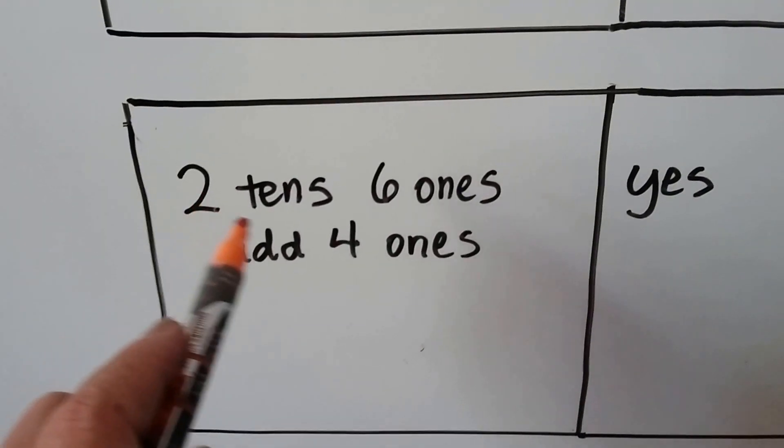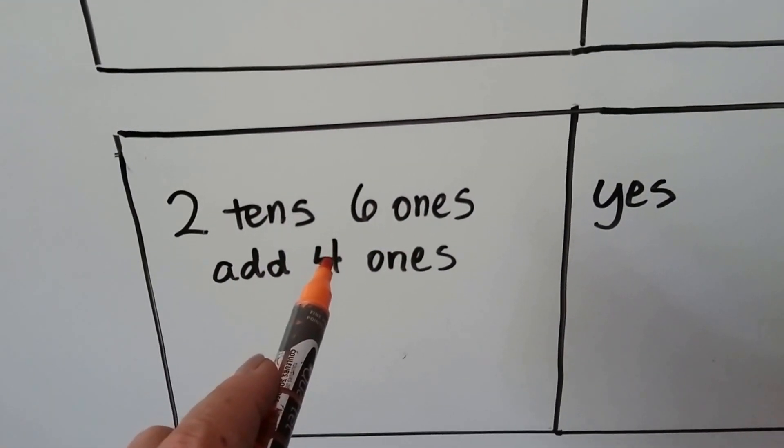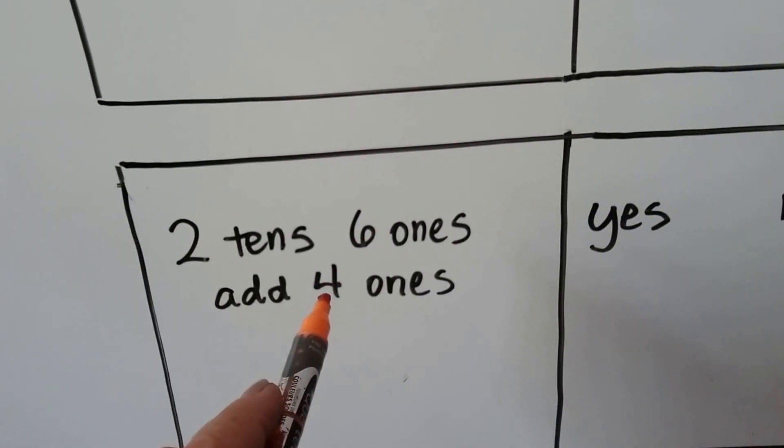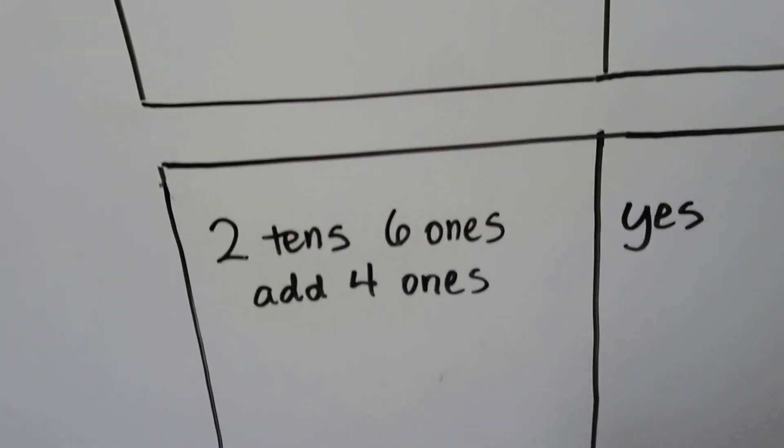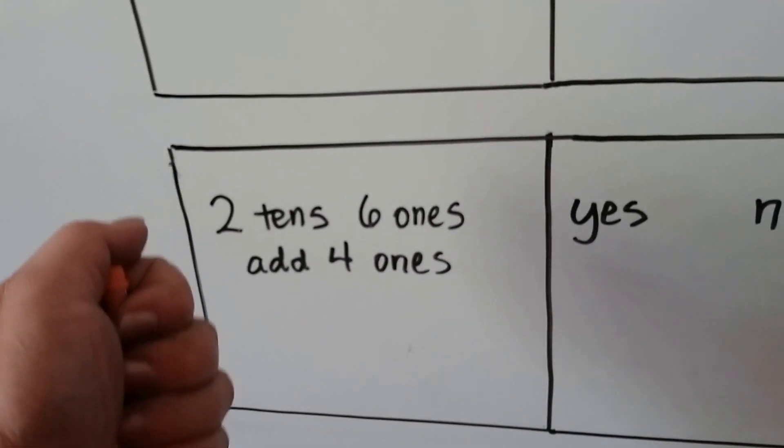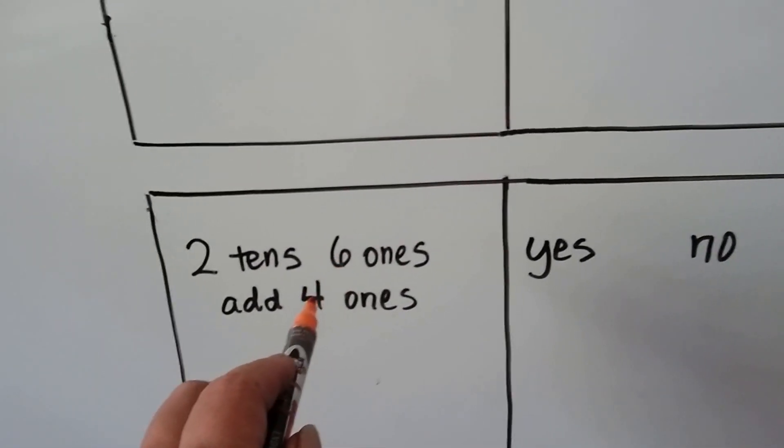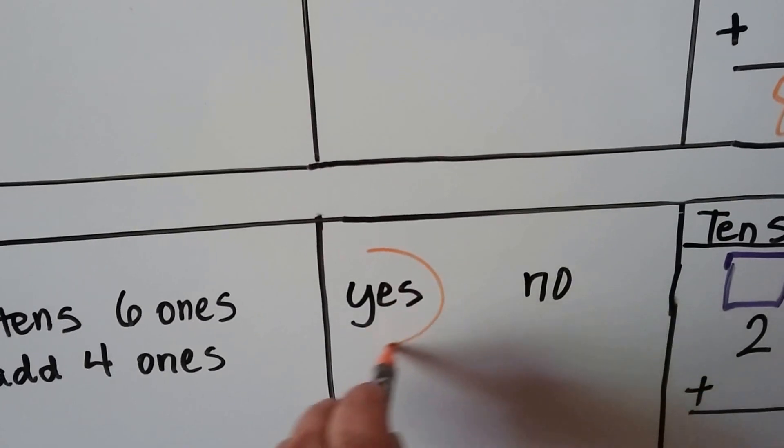Let's try this one. We have 2 tens and 6 ones and we want to add 4 ones. Can we make a 10 if we add 6 and the 4? The 6 ones and the 4 ones? Well, 6 plus 4 is 6, 7, 8, 9, 10. That is a 10. We can give that 10 to the tens place. So yes, we do need to regroup.